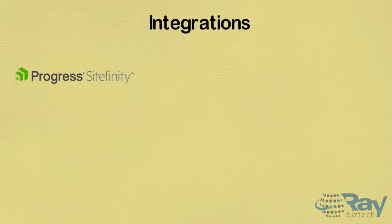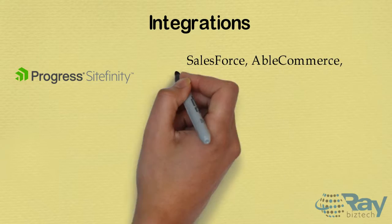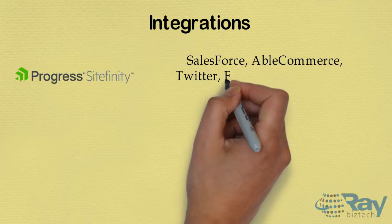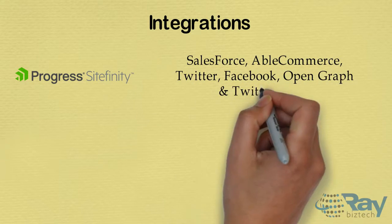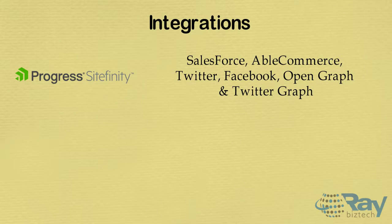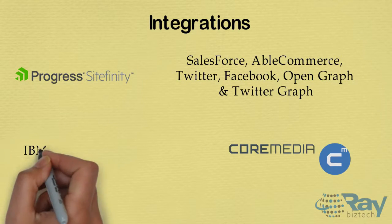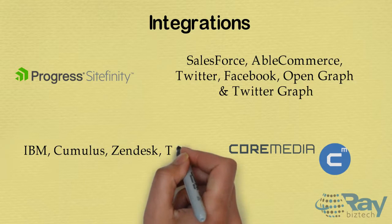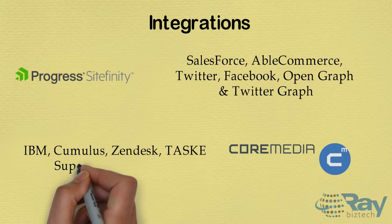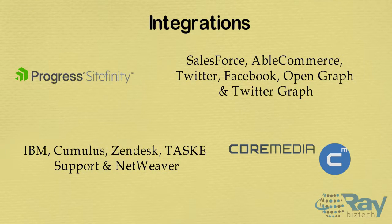Integrations for Progress Identity include Salesforce, AbleCommerce, Twitter, Facebook, OpenGraph, and TwitterGraph. For CoreMedia, integrations include IBM, Cumulus, Zendesk, TaskKey support, and NetWeaver.